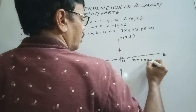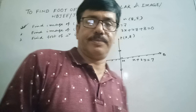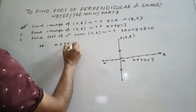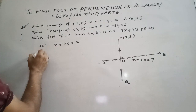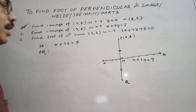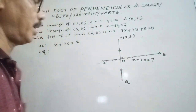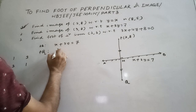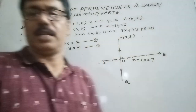Now for an example: find the image of point (3, 8) with respect to the line x + 3y = 7. We use the same technique. AB is x + 3y = 7. Now PQ is perpendicular to AB. To find the perpendicular equation, change the coefficients of x and y and take a negative sign in one of them. So the perpendicular line PQ is 3x − y = k.